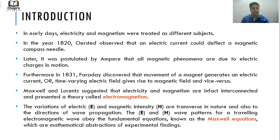Maxwell and Lorentz suggested that electricity and magnetism are in fact interconnected and presented a theory called electromagnetism. The variations of electric and magnetic intensity, E and H, are transverse in nature and also to the directions of wave propagation. The E and H wave patterns for a traveling electromagnetic wave obey the fundamental equations known as Maxwell's equations, which are the heart of this module and are the mathematical abstractions of the experimental findings.